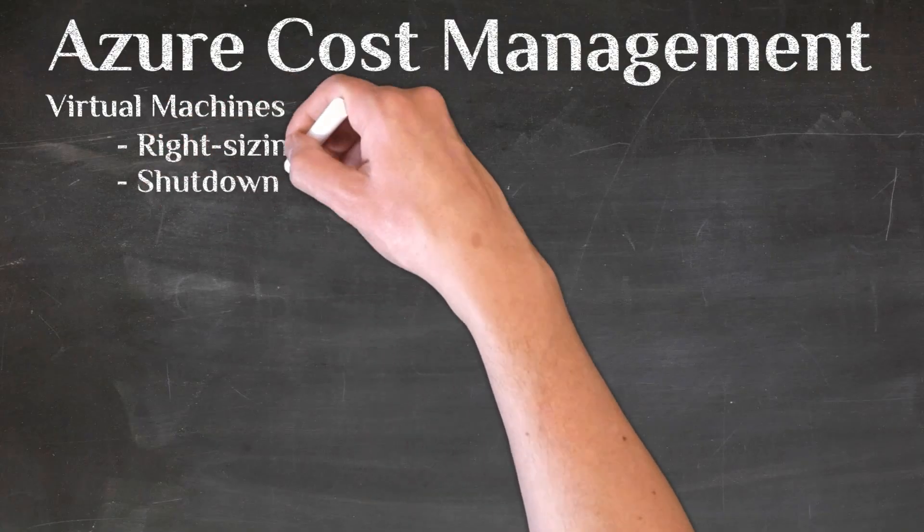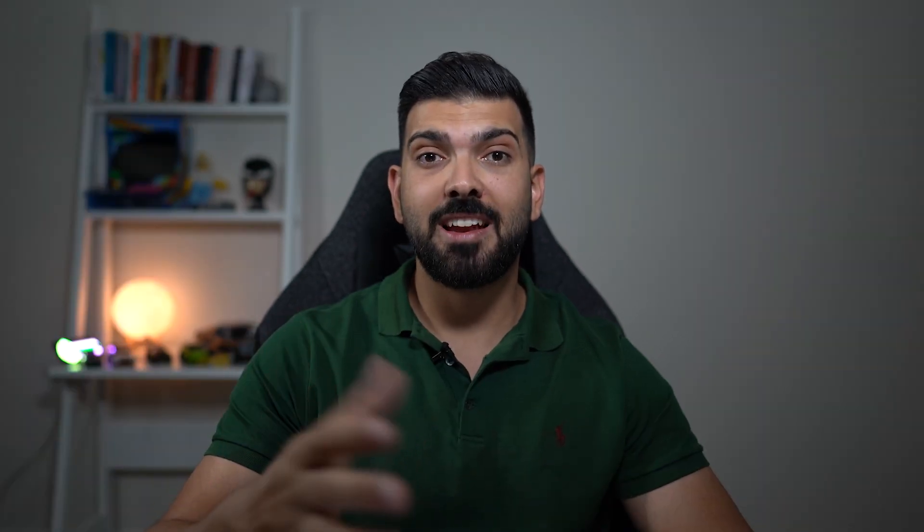The next tip is shutting down VMs when they're not in use — you can save a lot of money this way. Static workloads like domain controllers, SCCM, and shared services accessed by many applications and users need to stay on. But for dev environments or applications only used at certain times of day, you can put them on a shutdown and startup schedule using scripting or the Azure portal.